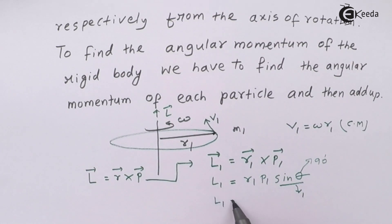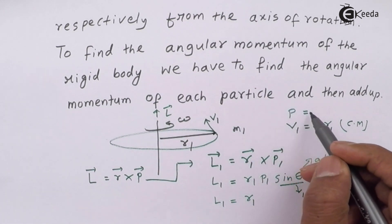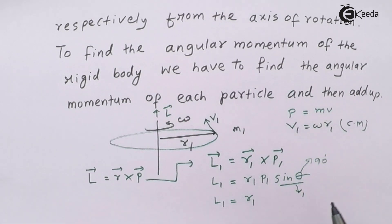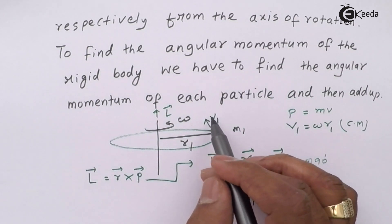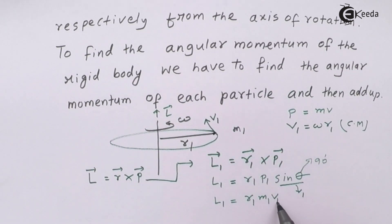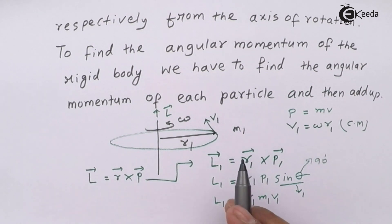So this is left with R1 and P1. Since linear momentum P equals M times V, for this particle of mass M1 with velocity V1, we get L1 equals M1 times R1 times V1. This is the magnitude of the angular momentum for the first particle.